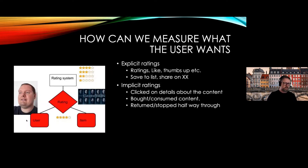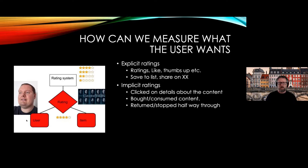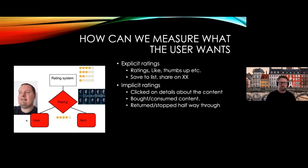Collaborative filtering is about the relationship between the user and the item that we can collect. You split interactions into explicit and implicit ratings. Explicit means the user has done something active to say they like or dislike something — thumbs up, thumbs down. Implicit ratings on the other hand include things like clicking on details, showing some kind of interest, or what we can interpret as interest.